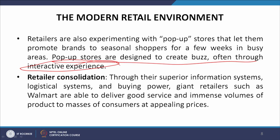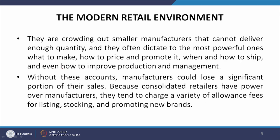The next change is retailer consolidation. Through their superior information systems, logistics systems and buying power, giant retailers such as Walmart are able to deliver good service and immense volumes of product to masses of consumers at appealing prices. They are crowding out small manufacturers that cannot deliver enough quantity, and often dictate to the most powerful ones what to make, how to price and promote it, when and how to ship, and even how to improve production and management. Without these accounts, manufacturers could lose a significant portion of their sales. Because consolidated retailers have power over manufacturers, they tend to charge a variety of allowance fees for listing, stocking and promoting new brands.